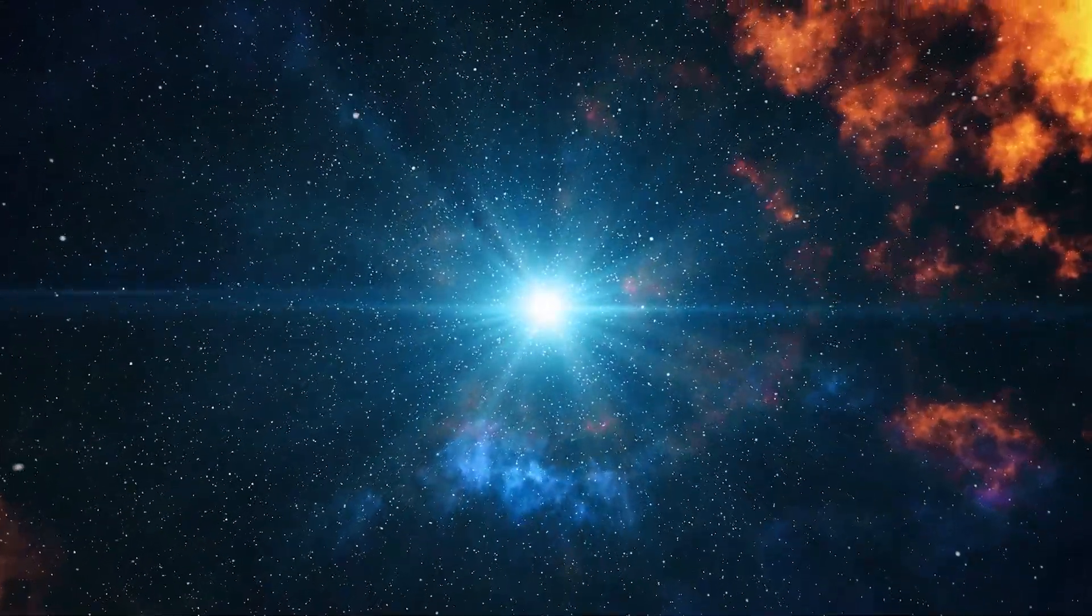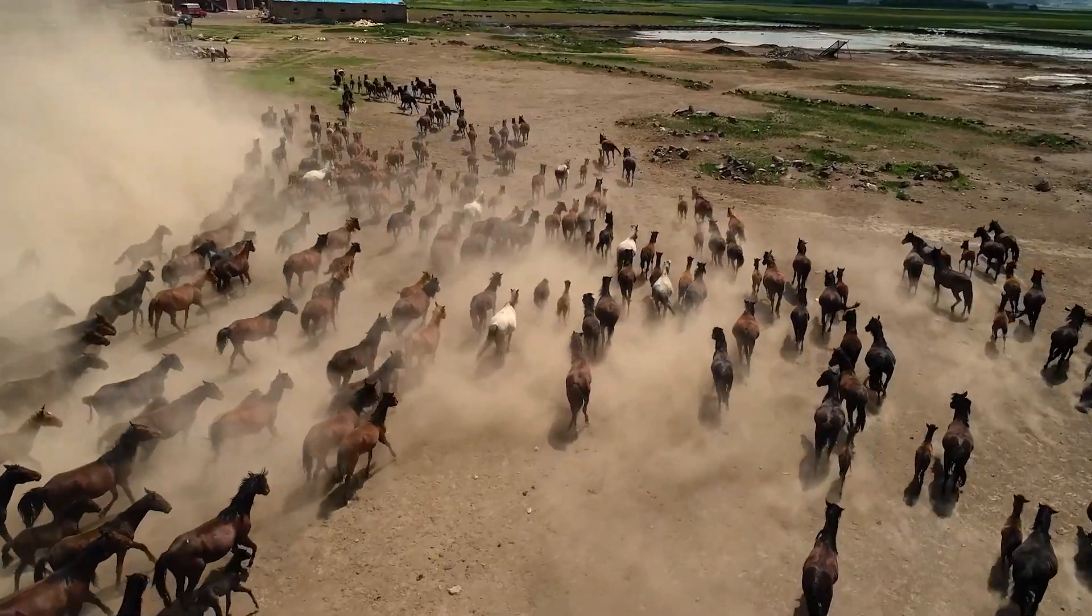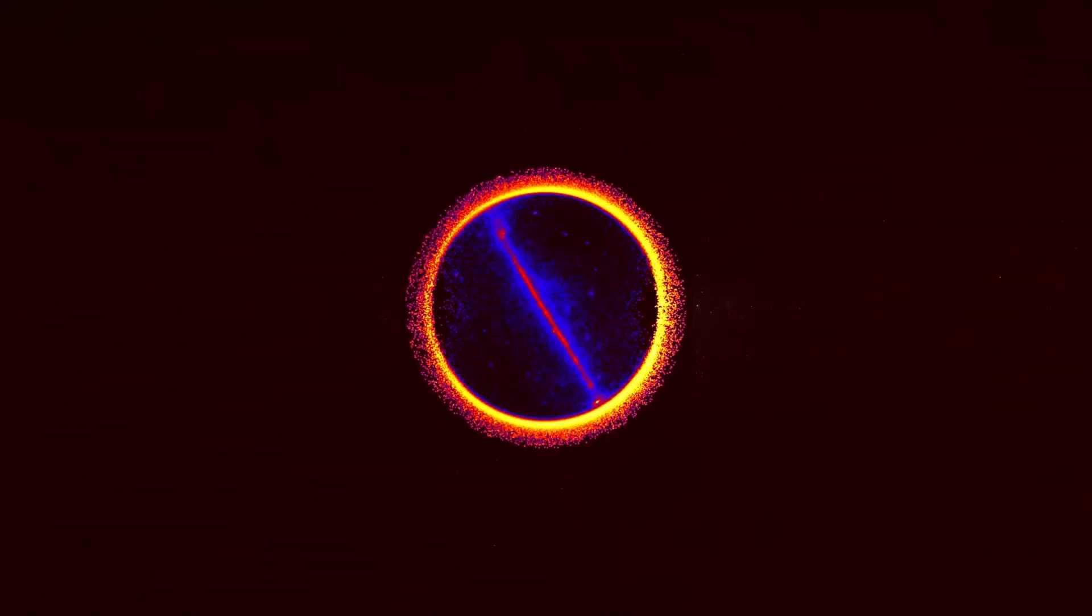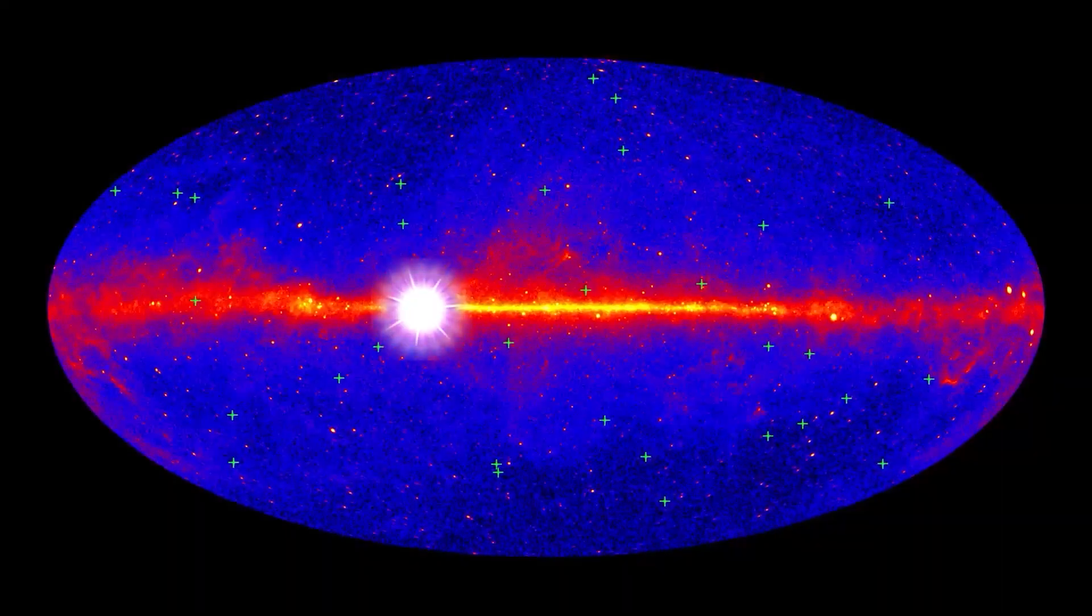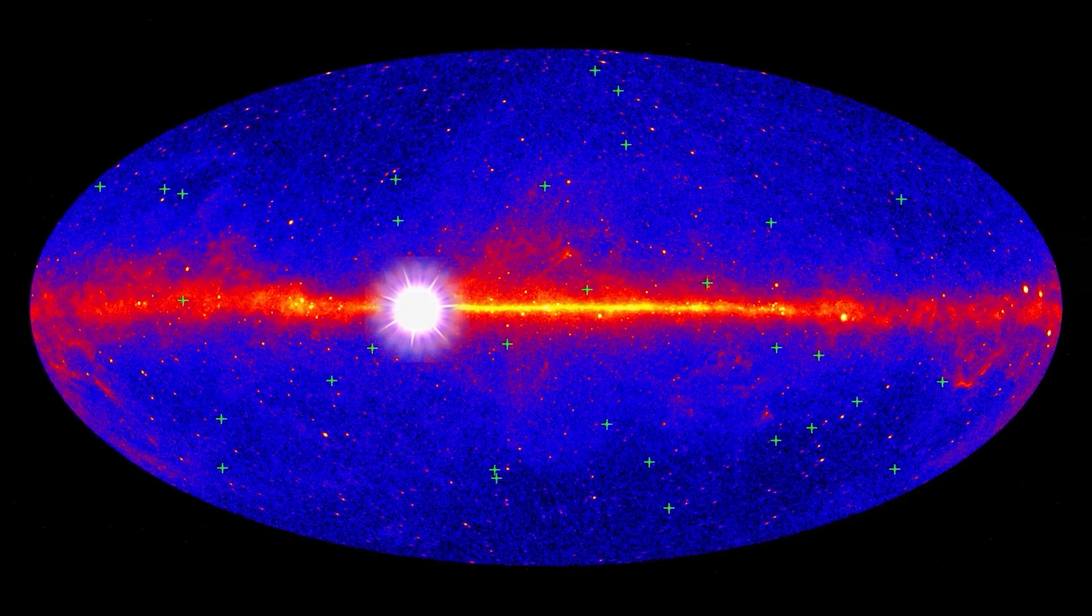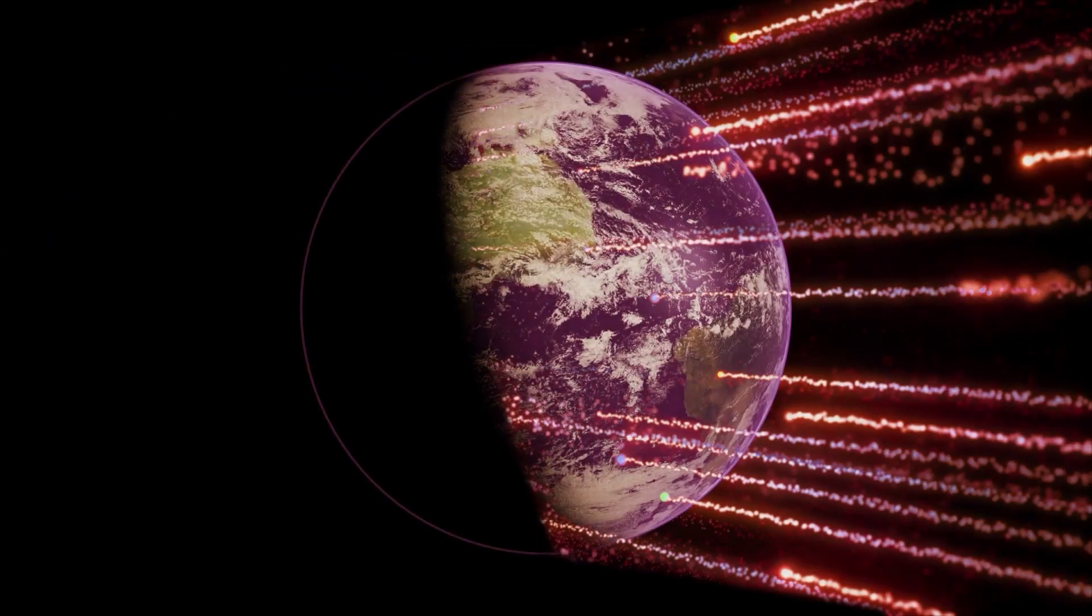It's possible the supernova might leave surface and ocean life relatively intact. However, the planet would be showered with gamma rays and other high-energy radiation, which could cause mutations in earthly life.